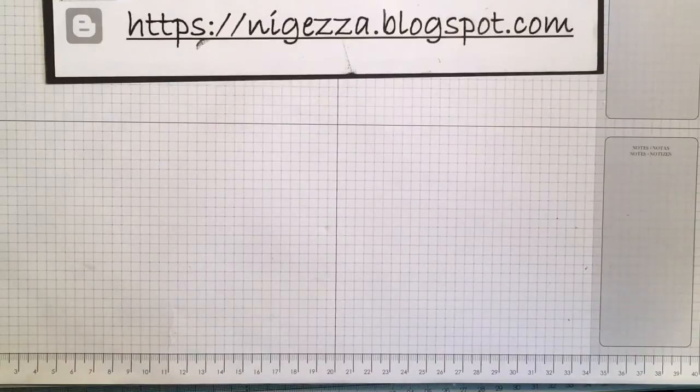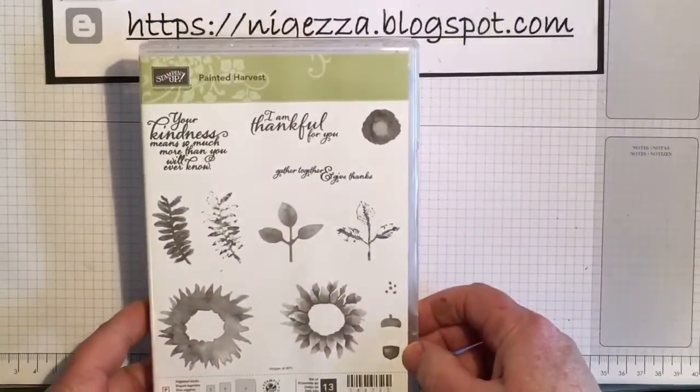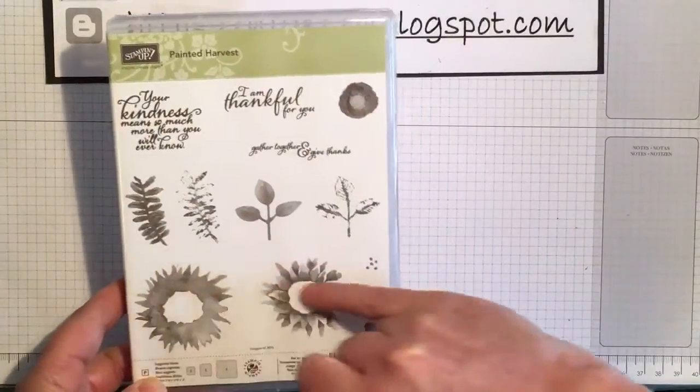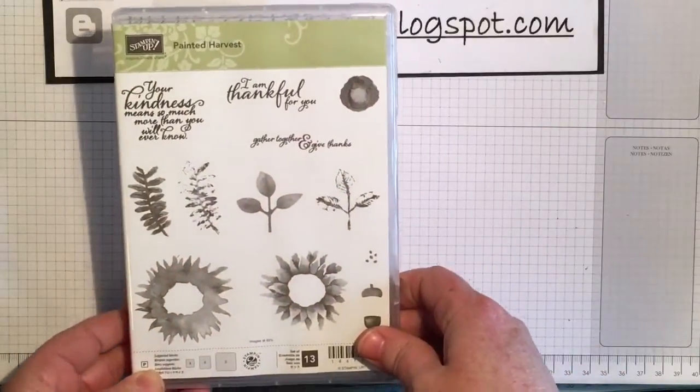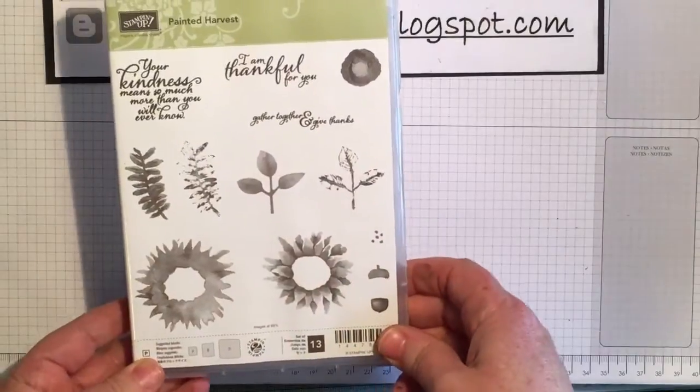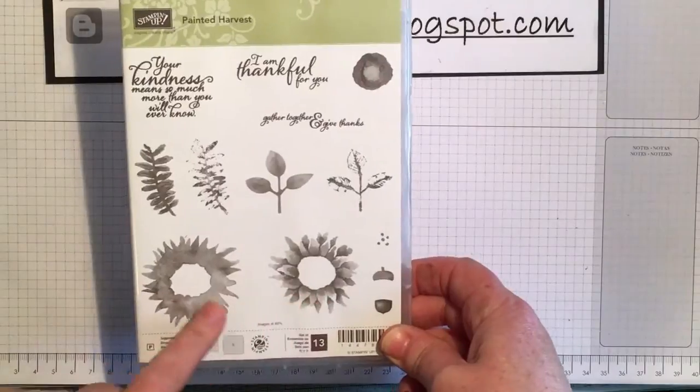It's coming out on the 1st of September and it's called Painted Harvest. It's got a really lovely two-step flower which could be a sunflower, it can be any flower, and I'm going to show you over the next coming videos some different ways that I've used this stamp.